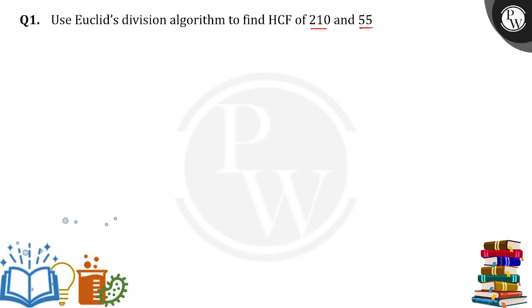What is Euclid's division algorithm? A equals bq plus r, where 0 is less than or equal to r less than b. So A is the dividend, q is the quotient, B is the divisor, and r is the reminder.